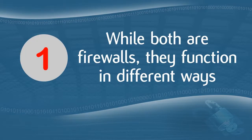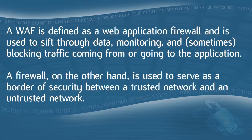The first difference: while they both are firewalls, they function in different ways. A WAF is used to sift through data, monitoring and sometimes blocking traffic coming from or going to the application. A firewall, on the other hand, serves as a border of security between a trusted network and an untrusted network. The WAF is primarily focused on security of an application, whereas a traditional firewall is focused on the security of a network.